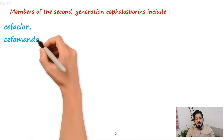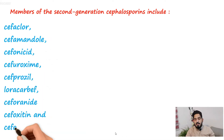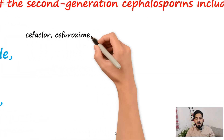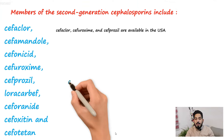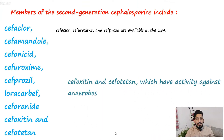Second generation cephalosporin members of this family include Cefaclor, Cefamandole, Cefonicid, Cefuroxime, Cefoxitin, and Cefotetan. Cefaclor, Cefuroxime, and Cefprozil are available in the United States. Cefoxitin and Cefotetan have activity against anaerobic bacteria.